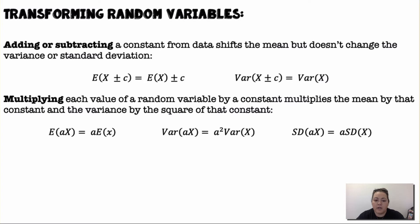Multiplying each value of the random variable by a constant multiplies the mean by that constant and the variance by the square of that constant. So the expected value or mean will be multiplied by whatever that constant is, the variance will be multiplied by that constant squared, and the standard deviation will be multiplied by that constant.